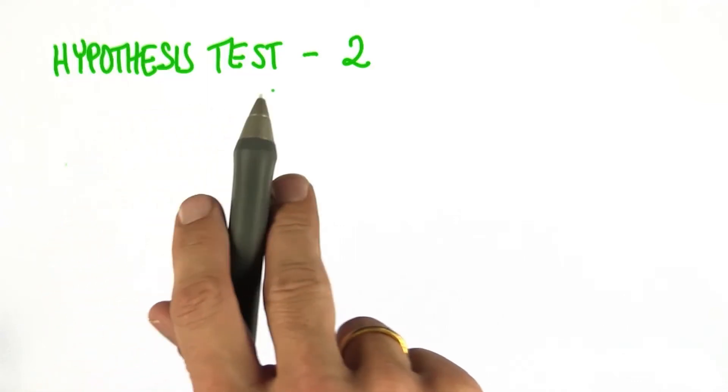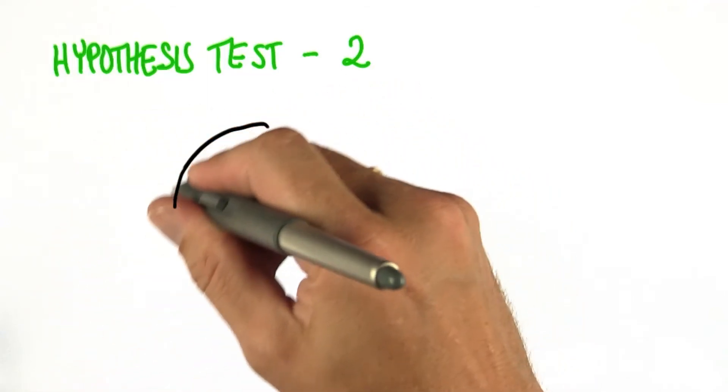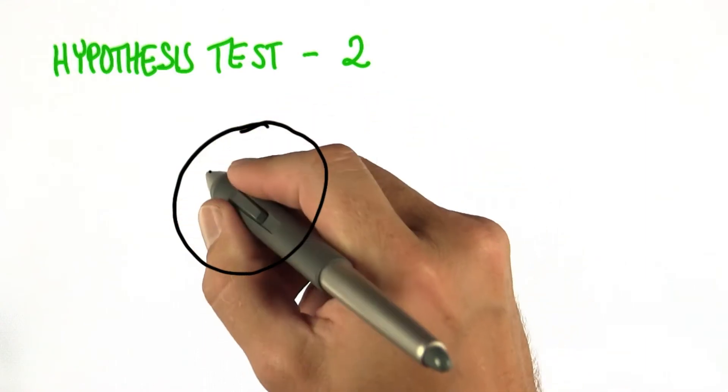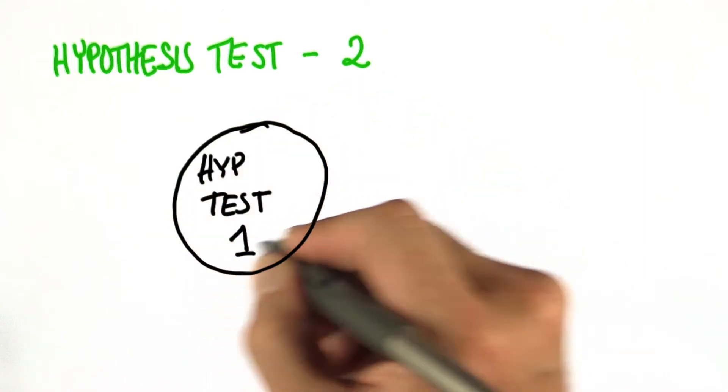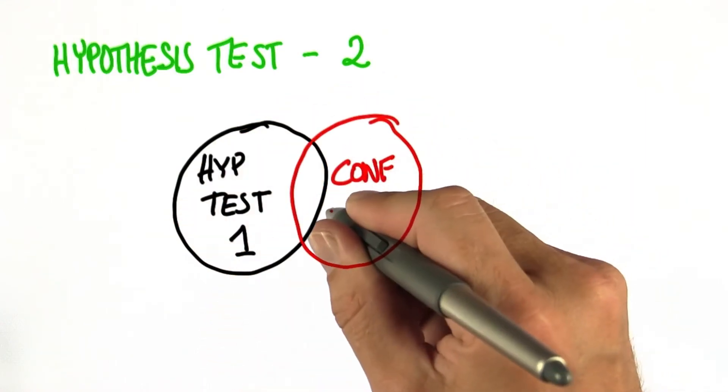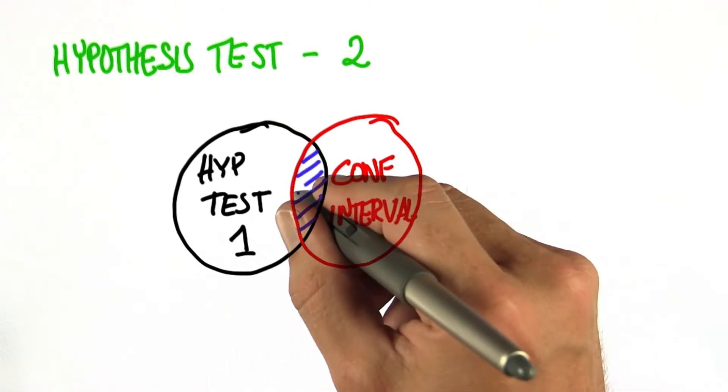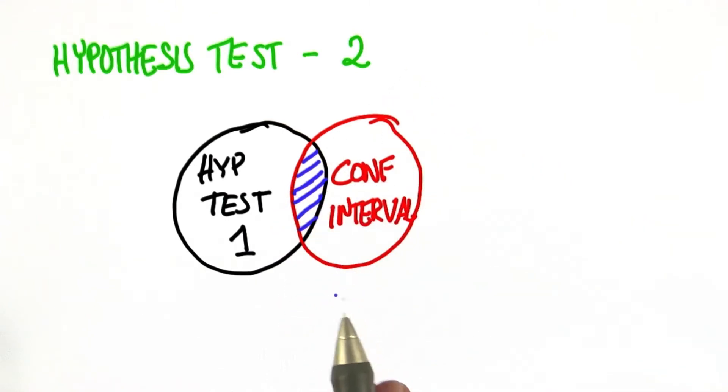So we now come to hypothesis test unit number two, and we just put together what we learned in the previous hypothesis test unit and in the unit on confidence intervals. So this ends up to be the dominant way of doing hypothesis testing.